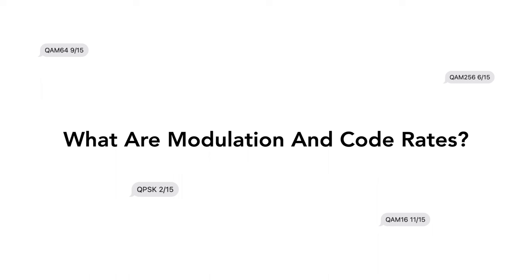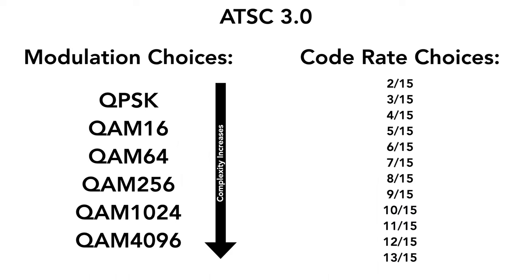But what even are modulation and code rates? ATSC 3.0 uses OFDM, but each PLP gets assigned its own modulation and code rate. The modulation choices are QPSK, QAM 16, QAM 64, QAM 256, QAM 1024, and QAM 4096. As you go down this list, the complexity of the modulation choice increases — the more you go down the list, the more the modulation is changing the radio wave in a way that makes it more complicated.